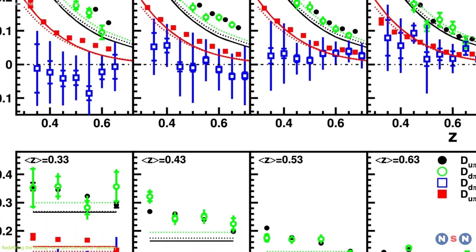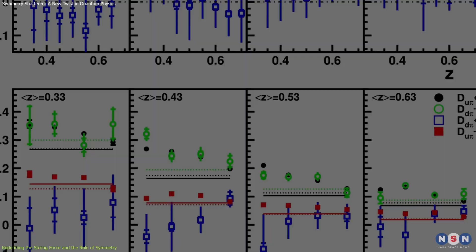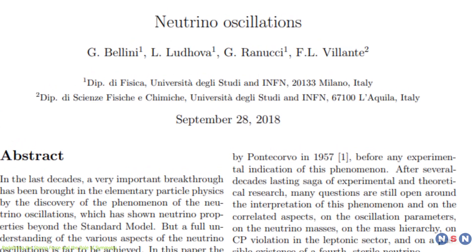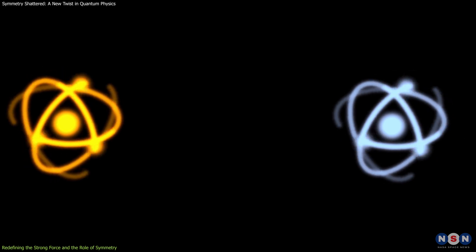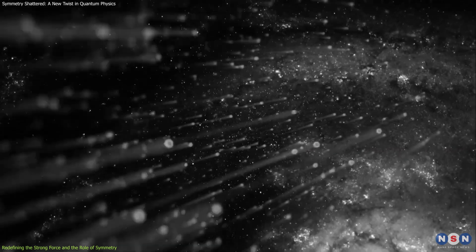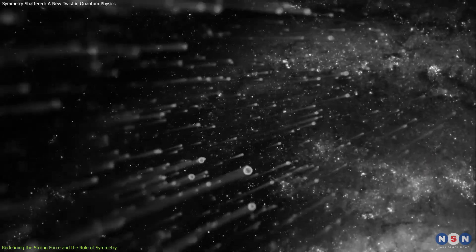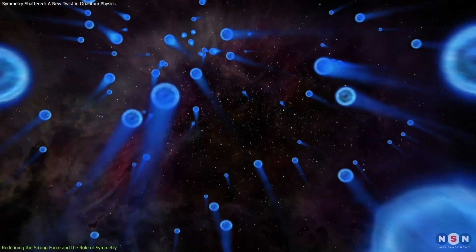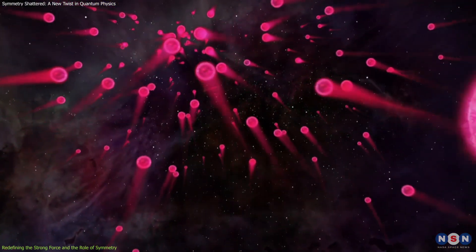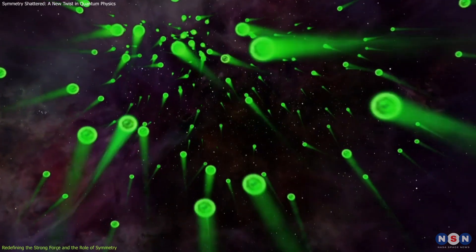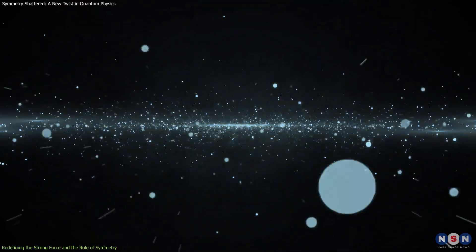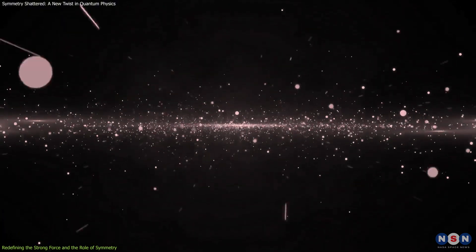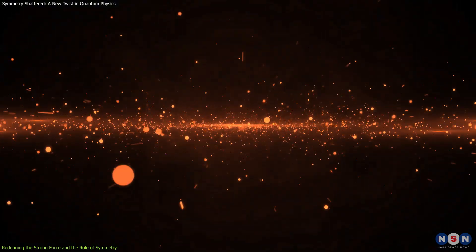But observed anomalies, like flavor-dependent fragmentation and previous discoveries such as neutrino oscillations, indicate these symmetries can break. Neutrinos, once thought massless and unchanging, have been found to shift between flavors—electron, muon, and tau—as they move through space. This oscillation directly contradicts early assumptions and highlights that unknown forces may be at play.